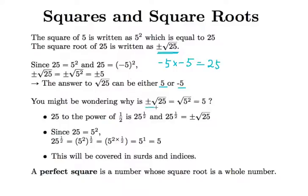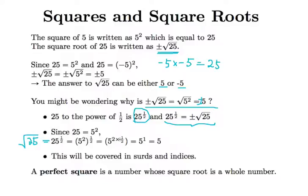You might wonder why square root of 25 equals ±5. Square root of 25 can also be written as 25 to the power of one half — they're equivalent. Since 25 = 5², we can rewrite it as (5²)^(1/2). In a future lesson on indices, you'll see that 2 × (1/2) = 1, giving us 5¹ = 5.